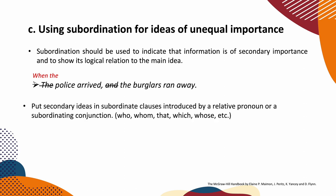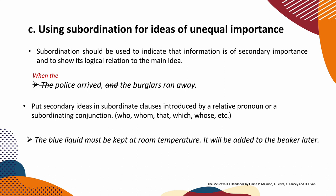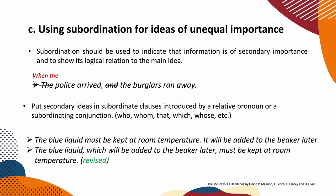Put secondary ideas in subordinate clauses introduced by a relative pronoun or subordinating conjunction like who, whom, that, which, whose, etc. For example: 'The blue liquid must be kept at room temperature. It will be added to a beaker later.' Revised: 'The blue liquid, which will be added to a beaker later, must be kept at room temperature.' The secondary idea 'which will be added to a beaker later' is placed in the middle with two commas before and after. The main idea is 'the blue liquid must be kept at room temperature.'